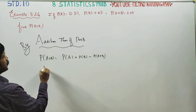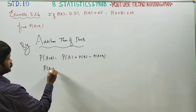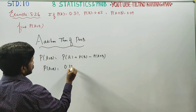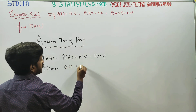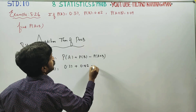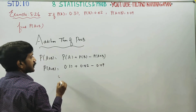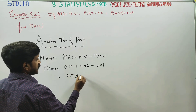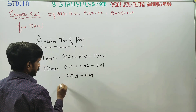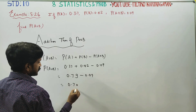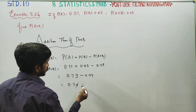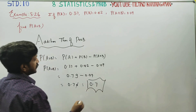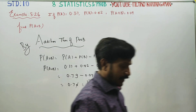Now, probability of A is equal to 0.37, probability of B is equal to 0.42, and probability of A intersection B is equal to 0.09. Adding: 0.37 plus 0.42 gives 0.79, minus 0.09 gives 0.70. So the probability of A union B is 0.70.